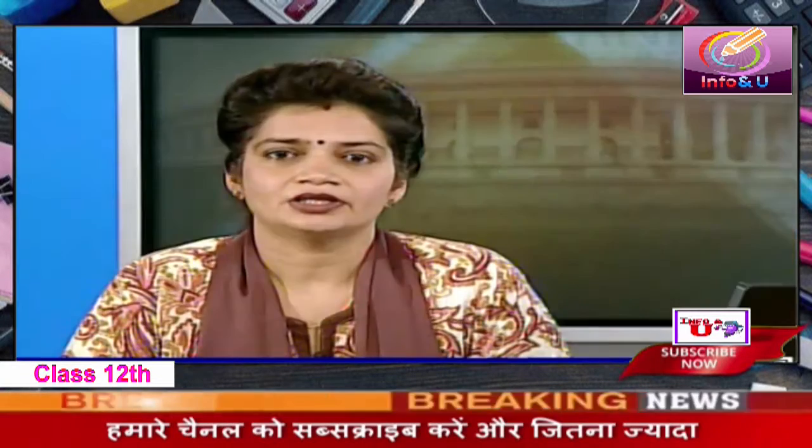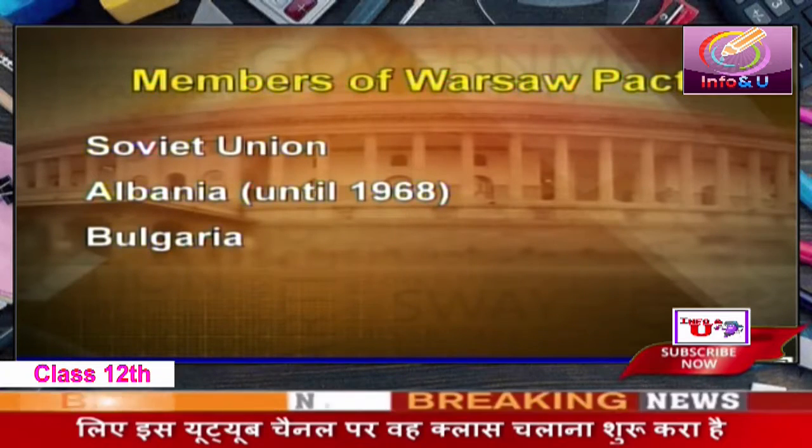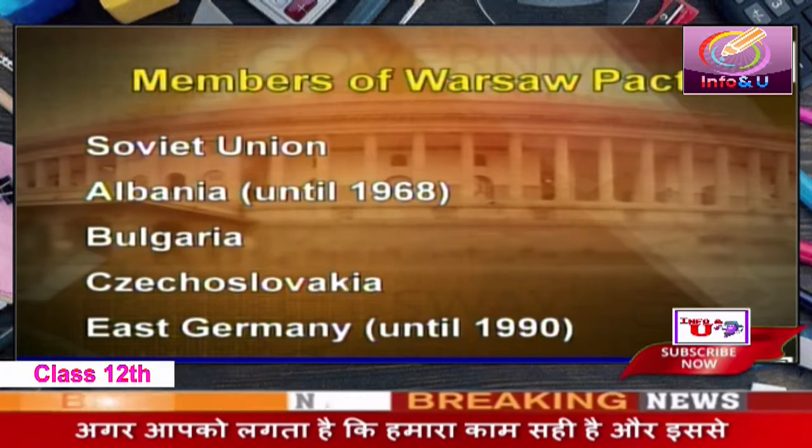On the other hand, the eastern alliance was established by the Soviet Union through the Warsaw Pact, signed in 1955. Its main aim was to counter NATO's forces in the west part of Europe. It was a political and military alliance between the Soviet Union and eastern European countries. Members of the Warsaw Pact included the Soviet Union, Albania, Bulgaria, Czechoslovakia, East Germany, Hungary, Poland, and Romania. The world got sharply divided between these two alliances, visible in every sphere of life — political, economic, military, and nuclear threats.